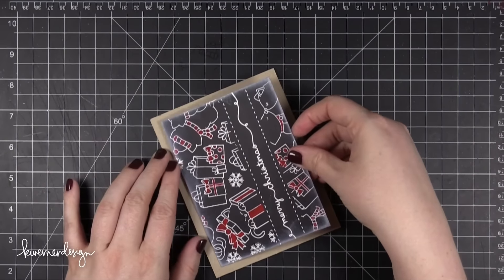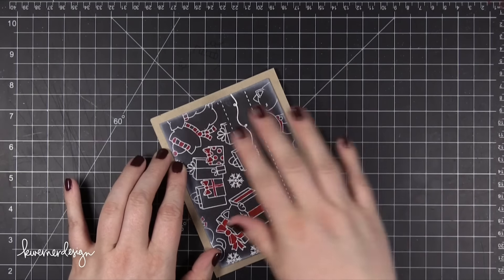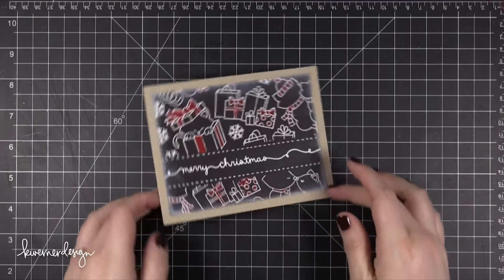I usually just start from one side, kind of press down the one side and then I can angle it and press down the other side and then I get a really nice card there.